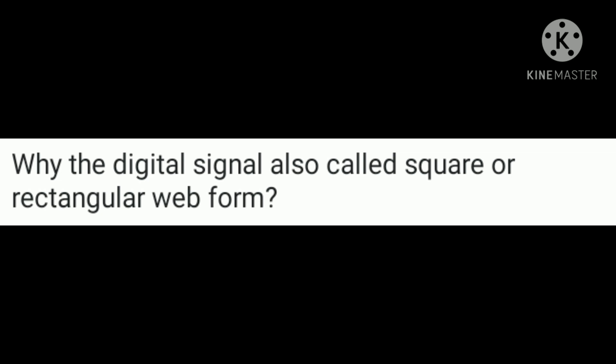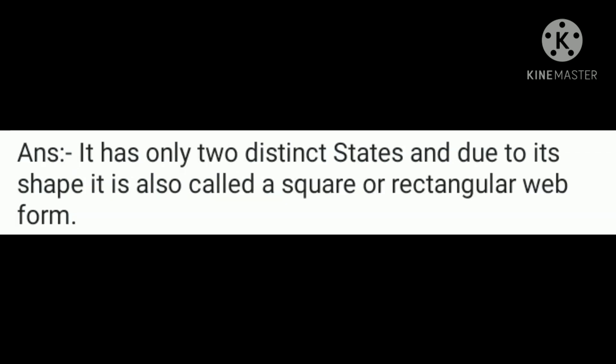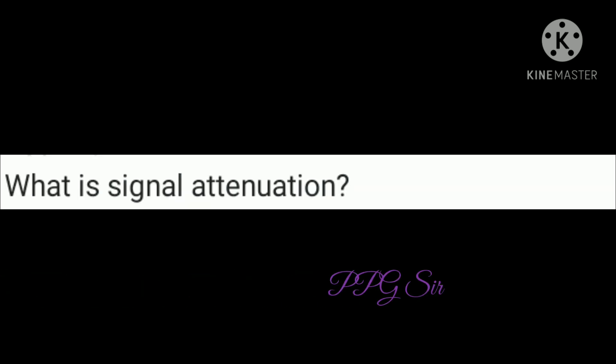Why is the digital signal also called a square or rectangular waveform? It has only two distinct states, and due to its shape, it is also called a square or rectangular waveform.